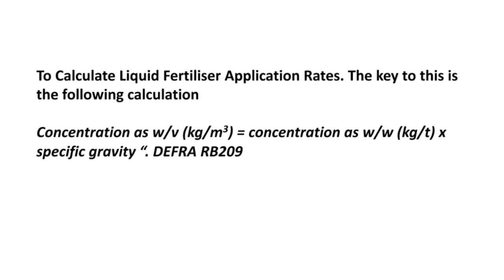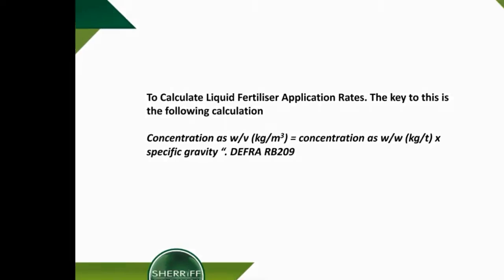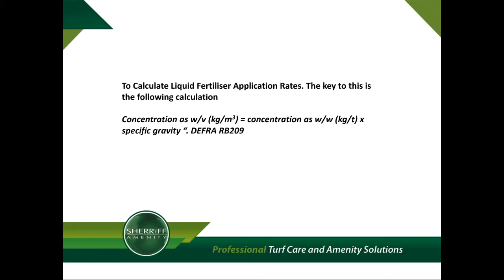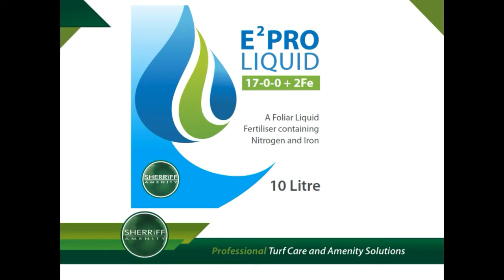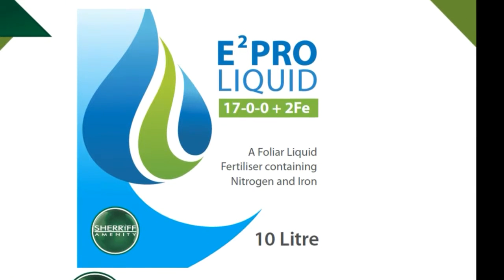This calculation assumes we are starting from a product expressed as weight by weight. However, we will first look at the far simpler calculation of weight by volume, since most liquid fertilizers are in fact expressed as weight by volume. This makes the product appear to contain more than if it must be stated as weight by weight. So if the N analysis is 17%, such as E2 Pro Liquid 1700 as stated on the label, and it is also known to be a weight by volume value...